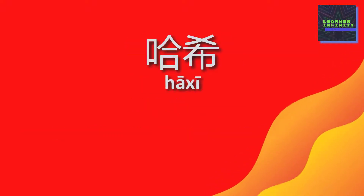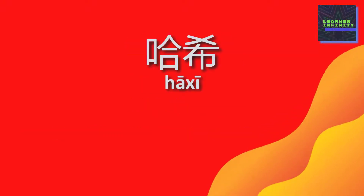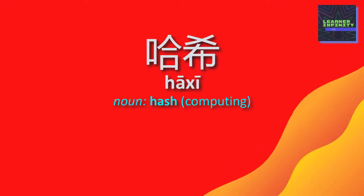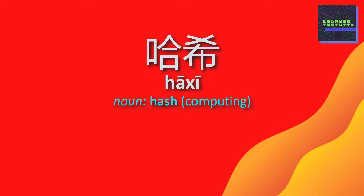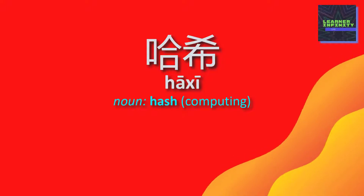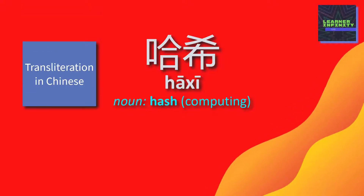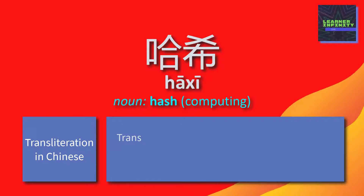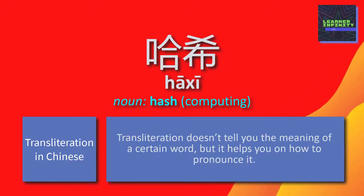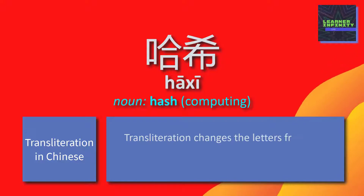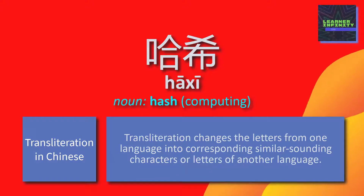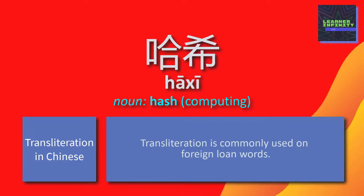The third word is 哈希. 哈希 is simply equivalent to the English computer technology term 'hash.' The Chinese word 哈希 and the English word 'hash' almost sound the same, right? This time, the Chinese characters do not help us in defining the word — this is a case of transliteration in Chinese. Transliteration does not tell you the meaning of a certain word, but it helps you on how to pronounce it. Transliteration changes the letters from one language into corresponding similar-sounding characters or letters of another language, and is commonly used on foreign loan words.